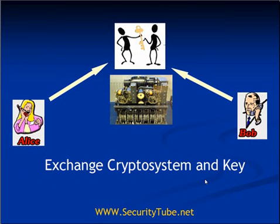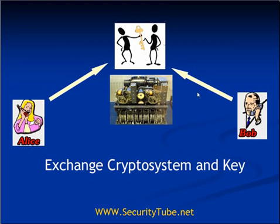The whole thing in theory is okay, but how practically is it going to happen? To do the communication privately, Alice and Bob have to decide upon a crypto system as well as a key. They have to exchange the crypto system and key in such a way that only Alice and Bob know them, and no one else in the world — so they have to exchange these things privately.